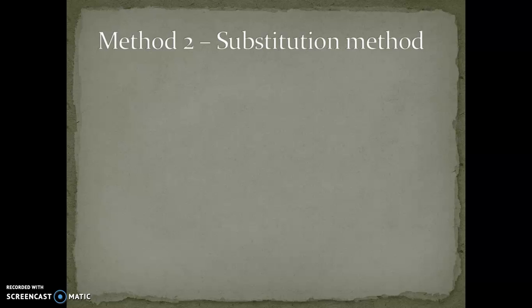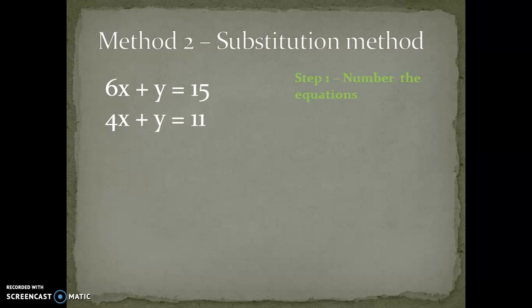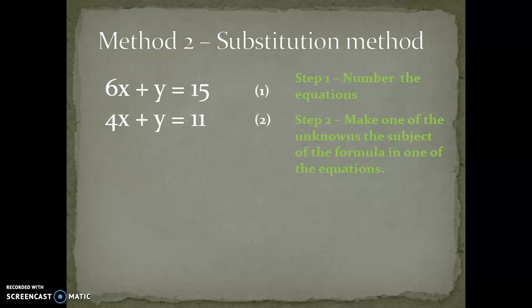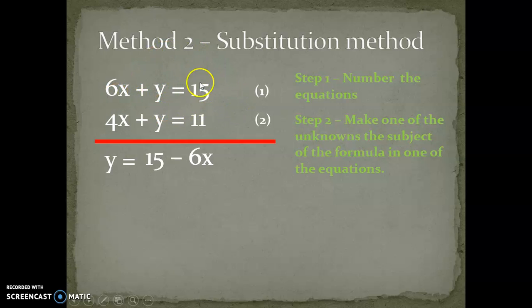Let's look at the second method, which is called the substitution method. This method also involves two equations. Step 1: number the equations as usual — the first and second equations are numbered. Step 2, which is slightly different from the elimination method: make one of the unknowns the subject of the formula in one of the equations. I've chosen the first equation, 6x plus y equals 15, and made y the subject, giving y equals 15 minus 6x.